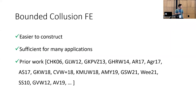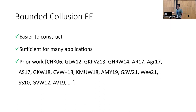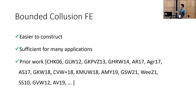Bounded collusion functional encryption has turned out to be a pretty successful definition. It is actually much easier to construct than full functional encryption, and it comes up in many applications. In fact, we already know how to construct it for all polynomial-size circuits just from public key encryption, which is pretty much the best you can hope for.